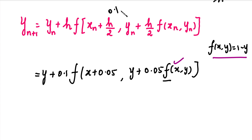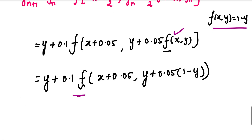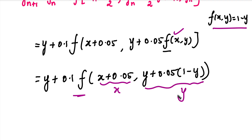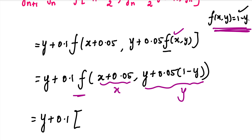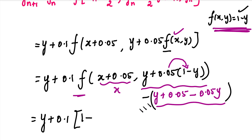In this place, we substitute 1 - y. So this equals y plus 0.1 into f(x + 0.05, y + 0.05 into (1 - y)). On the right-hand side we again apply f(x, y), which equals 1 - y. This gives y plus 0.1 into (1 - y), then expanding: y plus 0.05 minus 0.05y minus y, then minus 0.05, plus 0.05y.